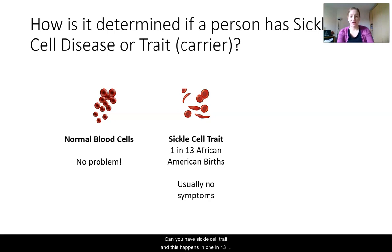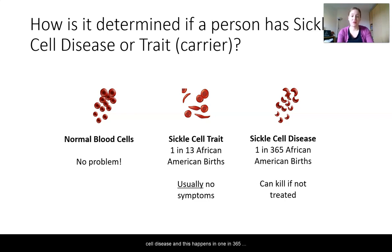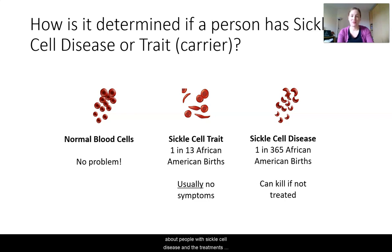Sickle cell trait happens in 1 in 13 African American births. Generally, people with sickle cell trait don't have symptoms. If all of your red blood cells are sickled, then you have sickle cell disease, which happens in 1 in 365 African American births. This disease can kill if it's not treated properly. We watched some videos earlier about people with sickle cell disease and the treatments available to them.